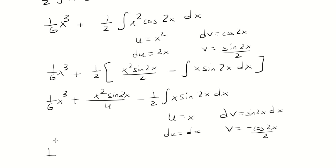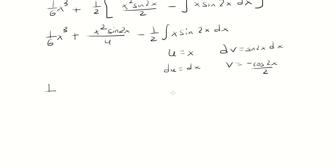So rewriting everything. We'll put a parenthesis after the 1 half. We have uv, which is negative x cosine 2x over 2, minus integral v du, would be negative cosine 2x over 2.